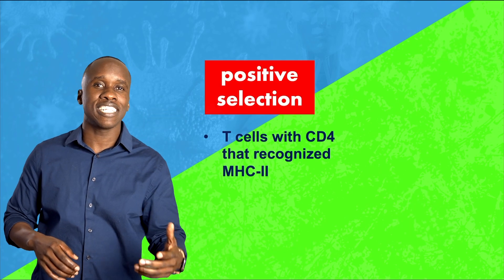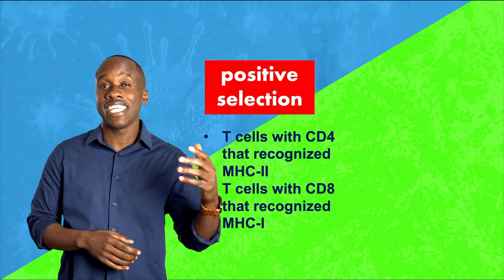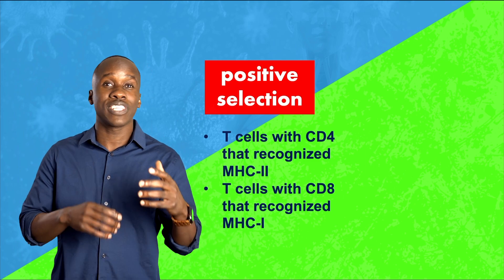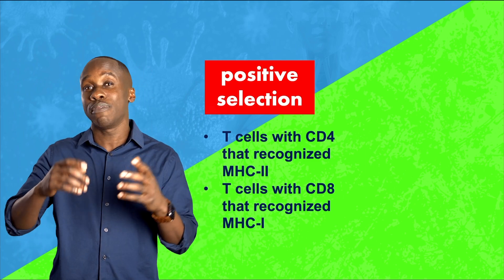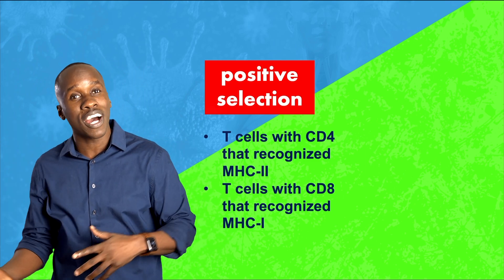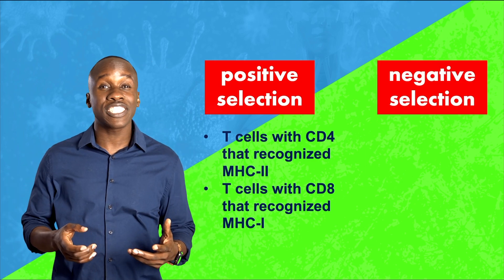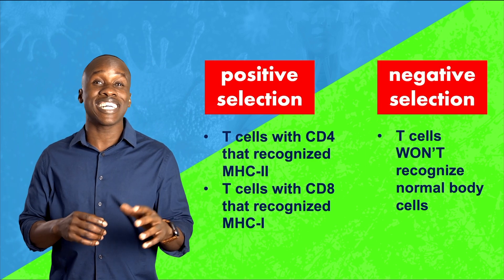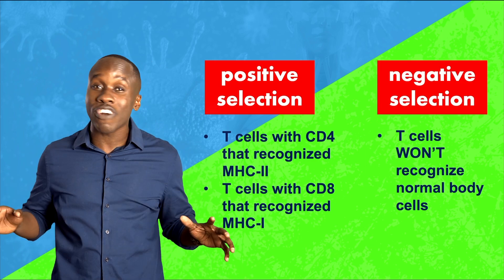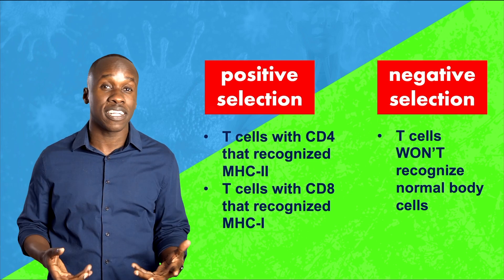So we've had positive selection for T cells having the CD4 and CD8 molecules that will successfully recognize MHC class 1 and 2. We had negative selection so that we only get T cells that won't recognize our normal body cells.